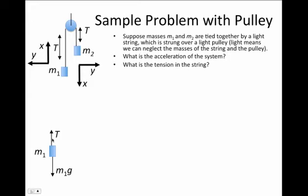However, it is connected to a string, and that string has a tension in it, so I'm going to write an arrow pointing in the upward direction, which has a force T for the tension of the string. In the case of the second mass, there's a force m2g pointing straight down.